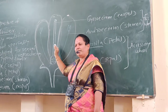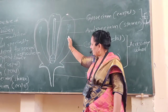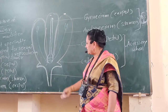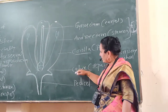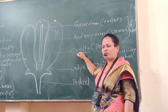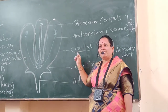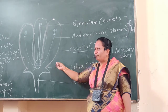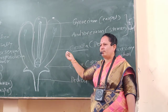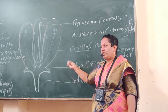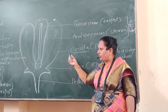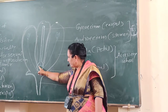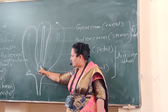The two innermost whorls, gynoecium and androecium, are protected and surrounded by the accessory whorls — calyx and corolla. Why are calyx and corolla called accessory whorls? Because they give support to the flower for pollination and fertilization, helping the flower to pollinate and fertilize the ovules.